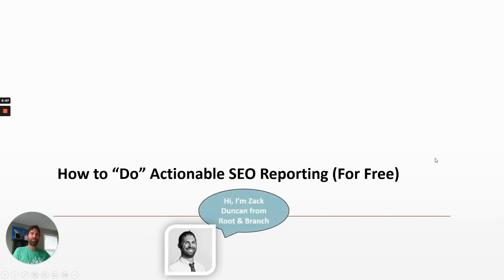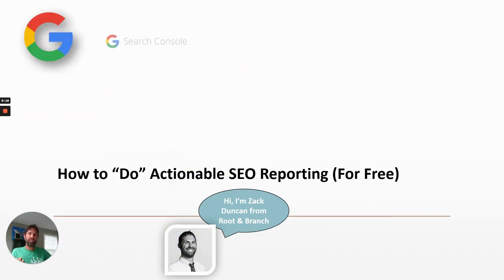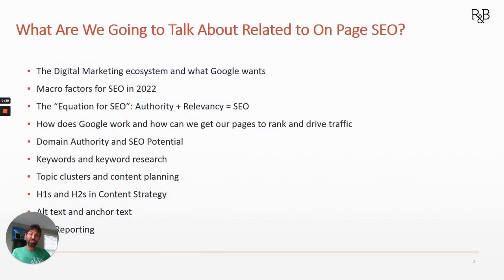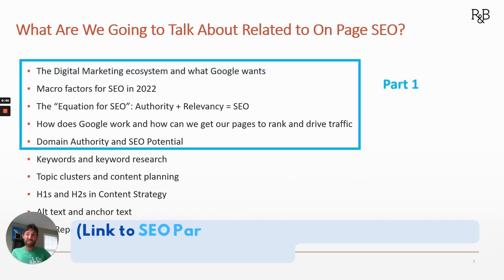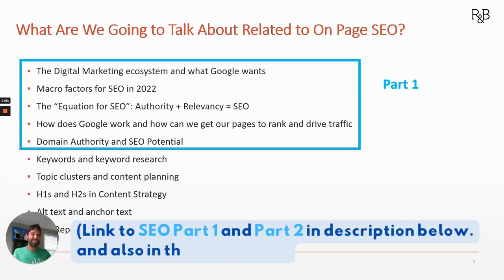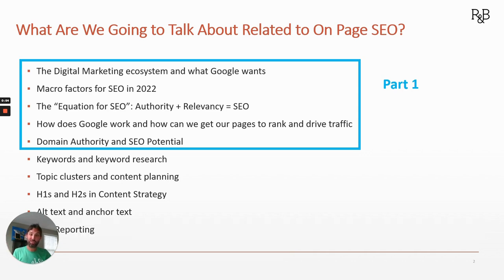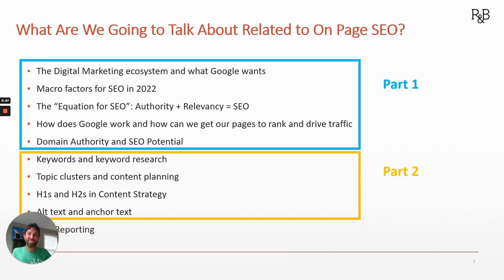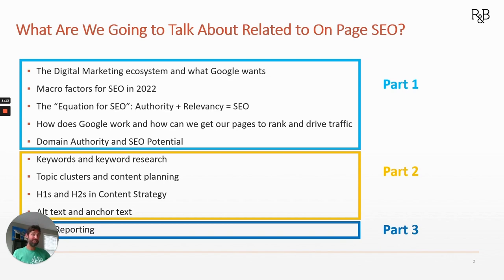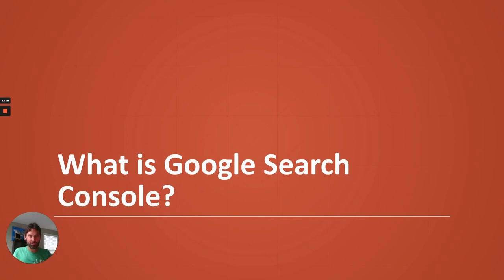Hey, what's up, this is Zach with Root and Branch Group. In this video we're going to talk about how to do actionable SEO reporting for free, focusing on Google Search Console. This is the third video of a three-part series on on-page SEO. The first video covered the equation for SEO — authority plus relevancy equals SEO — including domain authority and SEO potential.